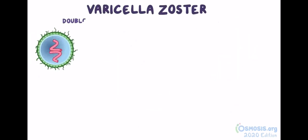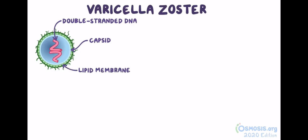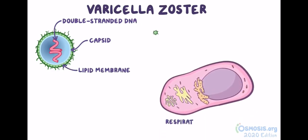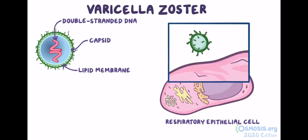Varicella zoster virus is a double-stranded DNA virus, protected by a protein coat called a capsid, which is enveloped by a lipid membrane. The virus initially enters respiratory epithelial cells, but eventually spreads to numerous cell types. It gets into all of these cells by fusing its membrane with the cell membrane and releasing the capsid inside the cell. The capsid then binds to the nucleus and injects it with viral DNA, where it's copied.